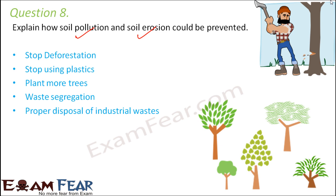Proper disposal of industrial wastes is essential because industrial wastes are extremely toxic. They should not be disposed in open areas, as they come in direct contact with the ground and end up contaminating the soil. Also, excessive use of insecticides and pesticides should be avoided as they increase chemical content in the soil and degrade its quality.